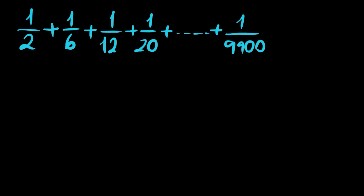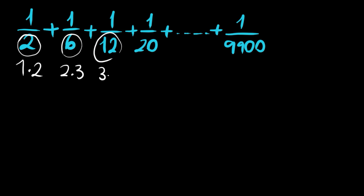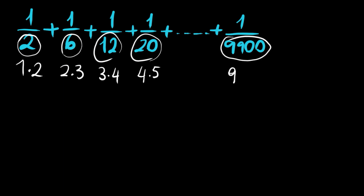We will see some property of these fractions. This 2 is just 1 times 2. This 6 is 2 times 3. This 12 is 3 times 4. And this is 4 times 5, and so on. The last denominator, 9900, is 99 times 100. So we have the product of 2 consecutive integers in the denominator.